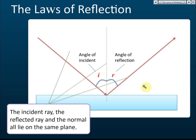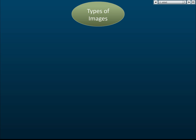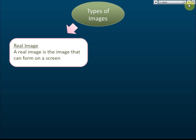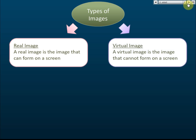The second law of reflection states that the incident ray, the reflected ray, and the normal must all lie on the same plane — meaning the same surface. These three lines — the normal, incident ray, and reflected ray — must lie on the same surface. That is the second law.